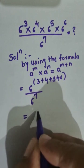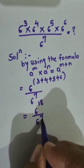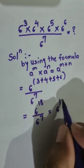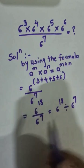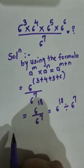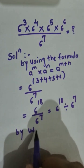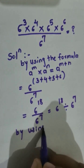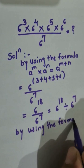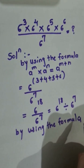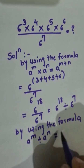After adding, we get 6 raised to 18, divided by 6 raised to 7. By using the formula: a raised to m divided by a raised to n is equal to a raised to m minus n. Applying this formula here.